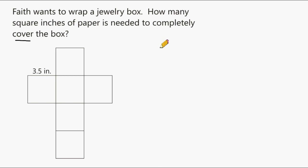For example, your skin covers the surface of your body, so anything that covers something is on the surface. A blanket is on the surface of the bed and it covers your bed. Therefore, to figure out how many square inches of paper is needed to cover the outside of the box, we have to understand that the box is actually the net of a cube.